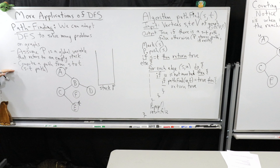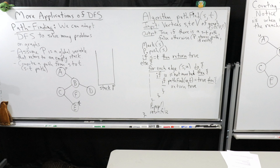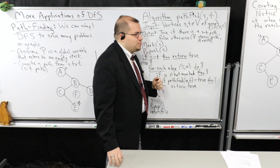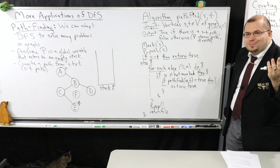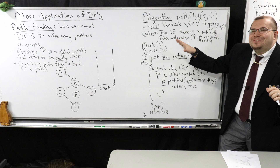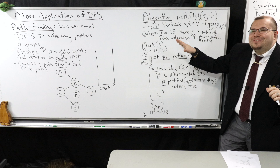Our goal here is to compute an ST path. To make this easier to illustrate, I'm going to assume that P is some global variable — I would not recommend this in general practice, but you could treat it as an instance variable. You just have some instance variable, make it private, and have some stack that you can make modifications to. You initialize it with your object or your graph. I'm just going to assume it's a global variable for pedagogical reasons.